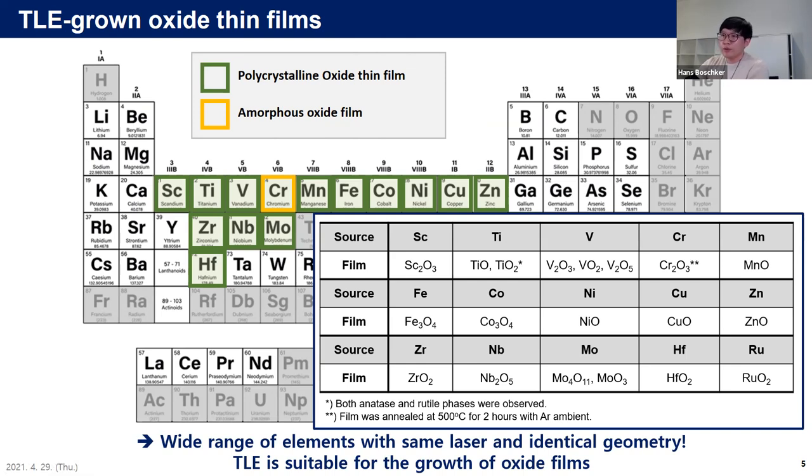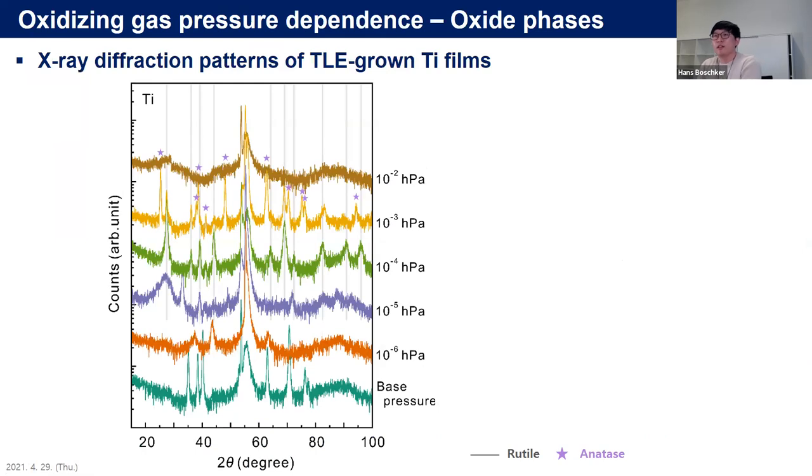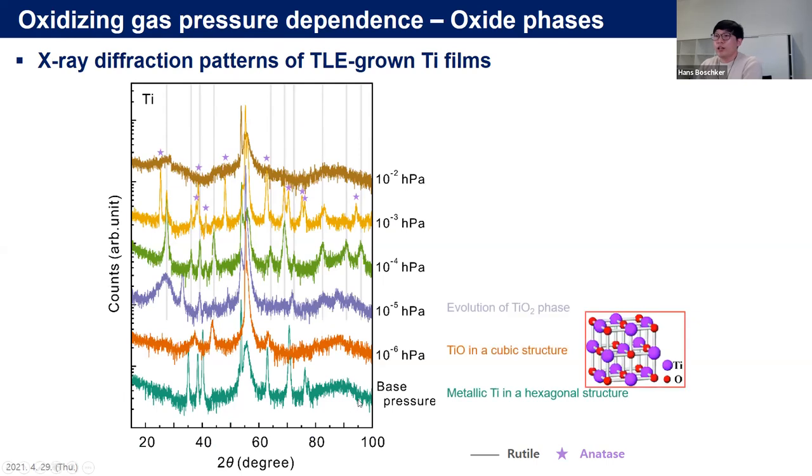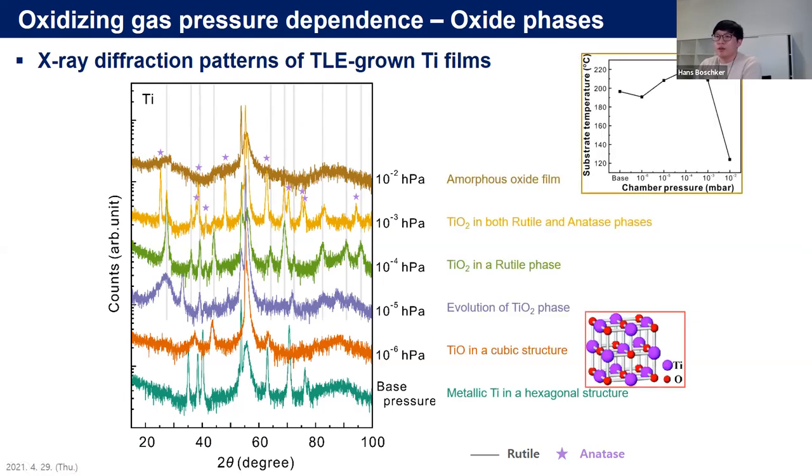In case of titanium, vanadium, and molybdenum, multiple oxide phases were produced depending on the oxidizing gas condition. Other elements formed a single oxidation state within the testing range. So the TLE method is applicable for a wide range of elements with the same laser and identical geometry, and it is quite suitable for growth of oxide films. Now let's talk about oxidizing gas pressure dependencies. This is the X-ray diffraction patterns of TLE-grown titanium films. Without oxidation gas, metallic titanium formed on the substrate. With oxidizing gas injection, the film becomes oxidized into monoclinic substoichiometric titanium monoxide, then titanium dioxide in rutile phase and titanium dioxide in anatase phase.